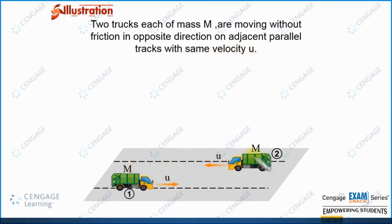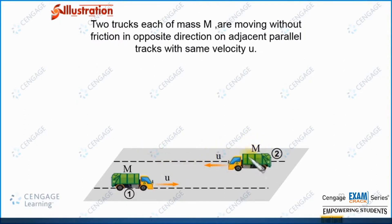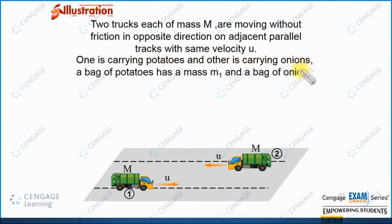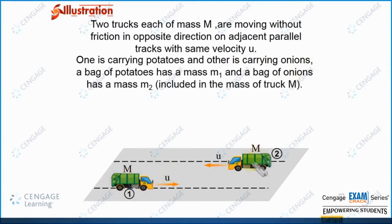You can observe here in this figure. Track number one is moving in the right direction with speed U and has mass capital M. Track number two is also moving on the parallel track with the same speed U and also has mass capital M. One is carrying potato and the other is carrying onion. The bag of potato has mass M1 and the bag of onion has mass M2, both included in the mass of the track, capital M.